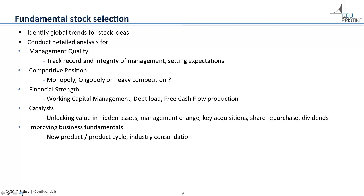Fund managers ideally want to invest in a company whose business fundamentals are improving — such as an innovative product cycle like Apple's iPhone — or where there is industry consolidation that leads to better prospects, such as the recent consolidation of the US airline industry benefiting companies like Delta Airlines. Following this in-depth fundamental analysis, the fund manager creates a detailed spreadsheet model of the company's financials to forecast future earnings and cash flow over the next three to five years, used to arrive at an expected return via discounted cash flow analysis or earnings multiples relative to itself and industry peers historically.